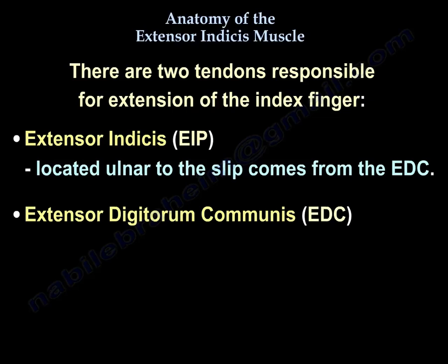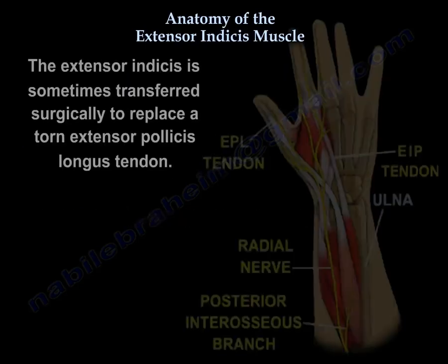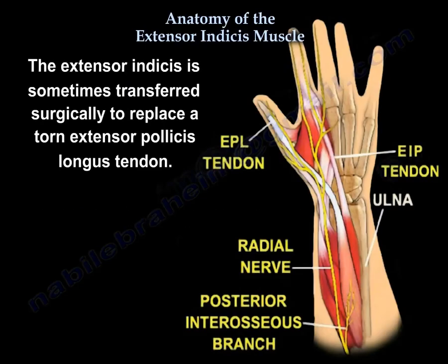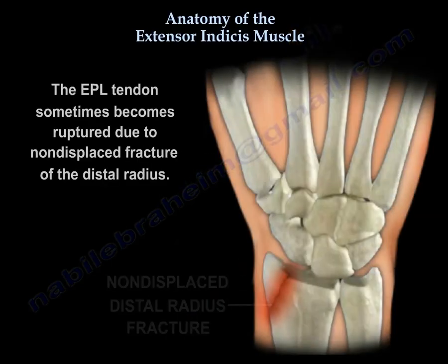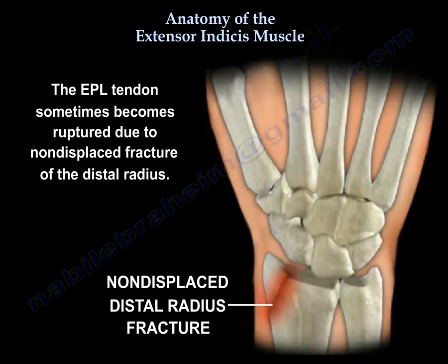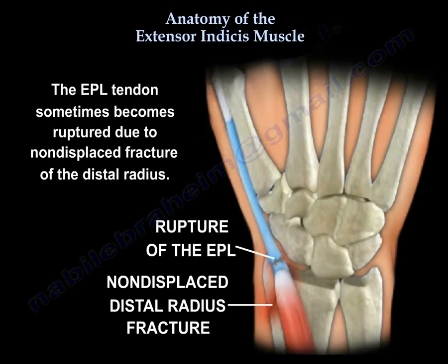Since the index finger has two tendons, we can borrow one of them for the thumb. That is why the extensor indices is sometimes transferred surgically to replace a torn extensor pollicis longus tendon.